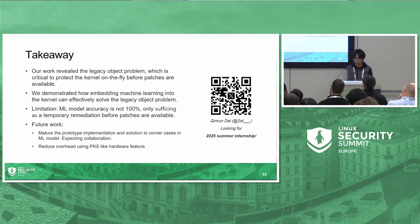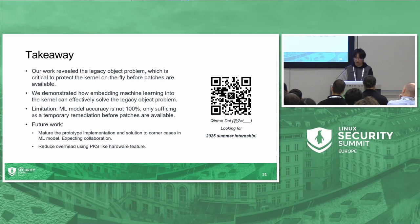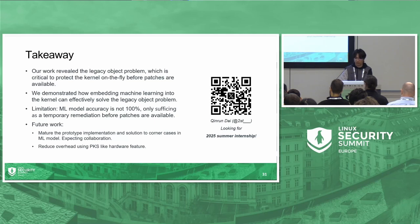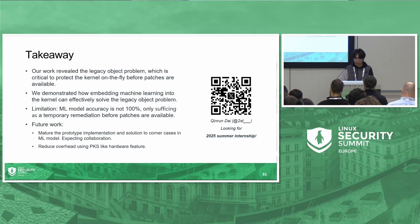Our takeaway: this work identifies the legacy object problem, which is critical to production kernel on-the-fly protection before patches are available. We demonstrate how embedding machine learning into the kernel can effectively resolve the legacy object problem. Our limitation is that the machine learning model accuracy is not 100 percent, but our approach can provide phased temporary remediation before patches are available. Future work includes maturing the prototype implementation, improving the machine learning model, and reducing overhead using hardware features and kernel technologies.